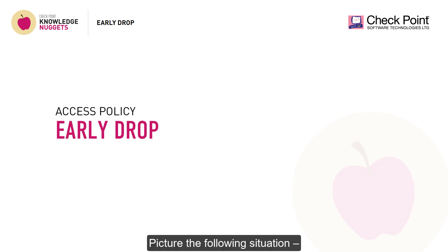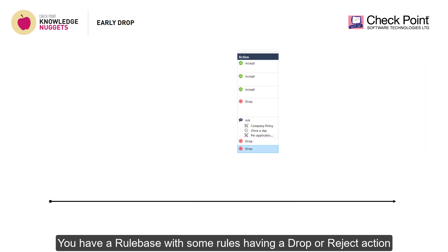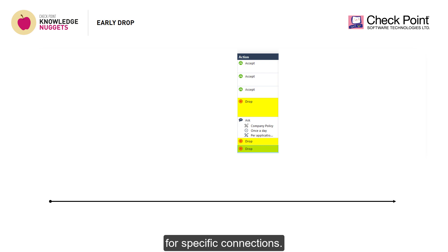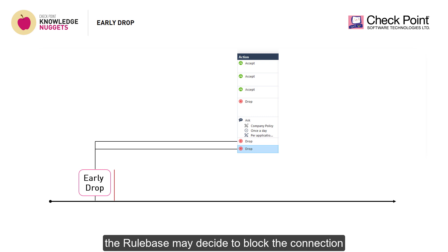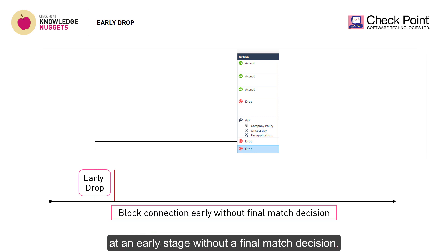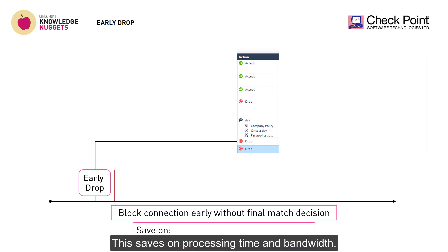Picture the following situation. You have a rule base with some rules having a drop or reject action for specific connections. For optimization purposes, the rule base may decide to block the connection at an early stage without a final match decision. This saves on processing time and bandwidth.